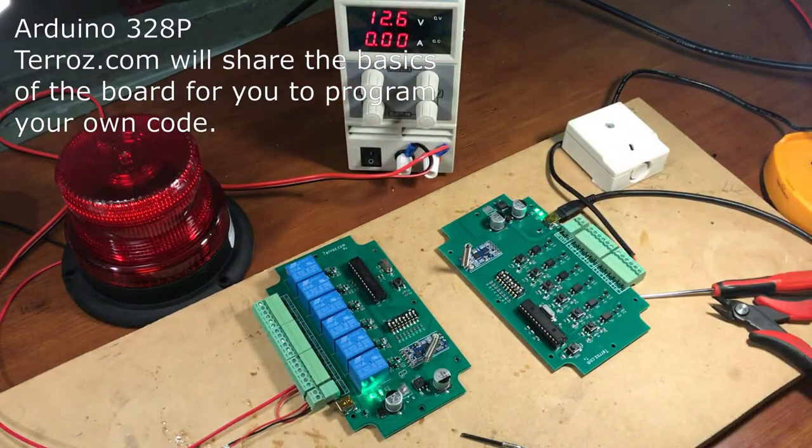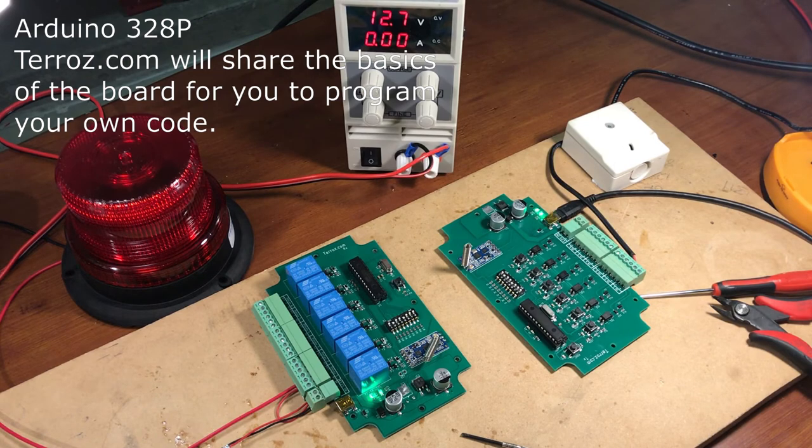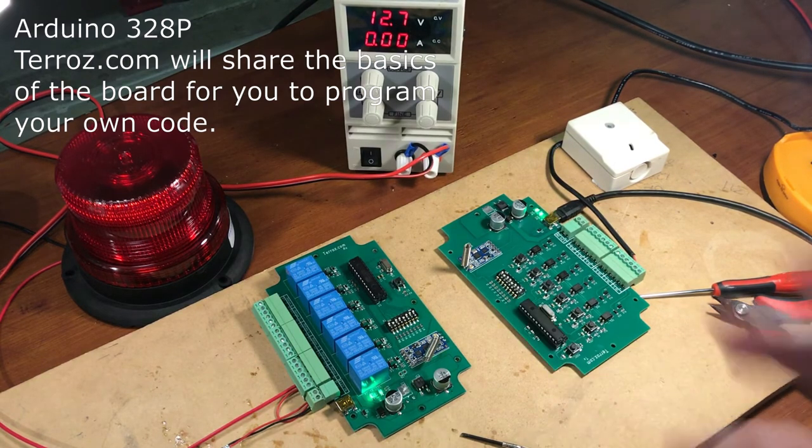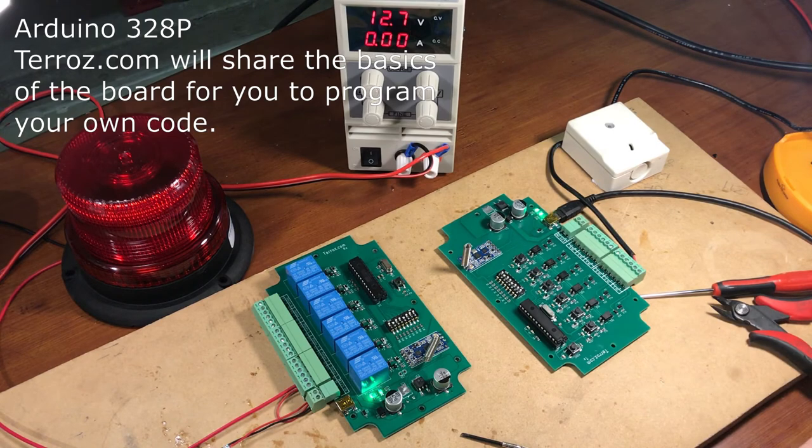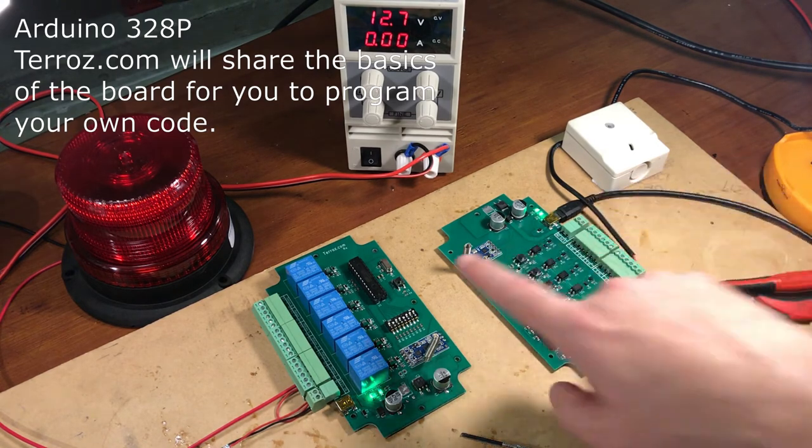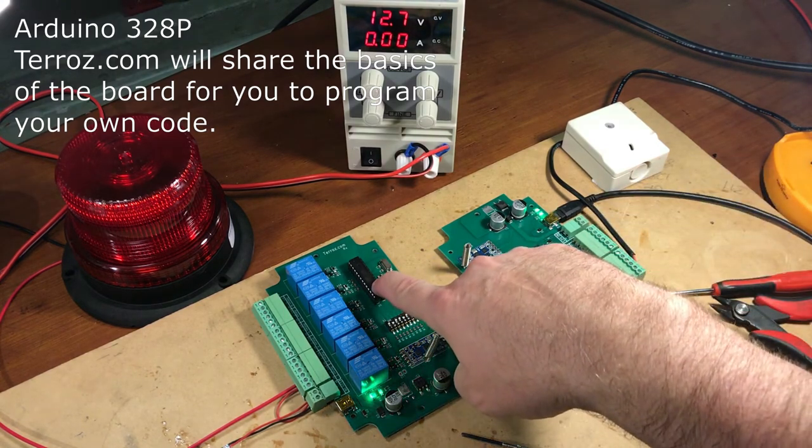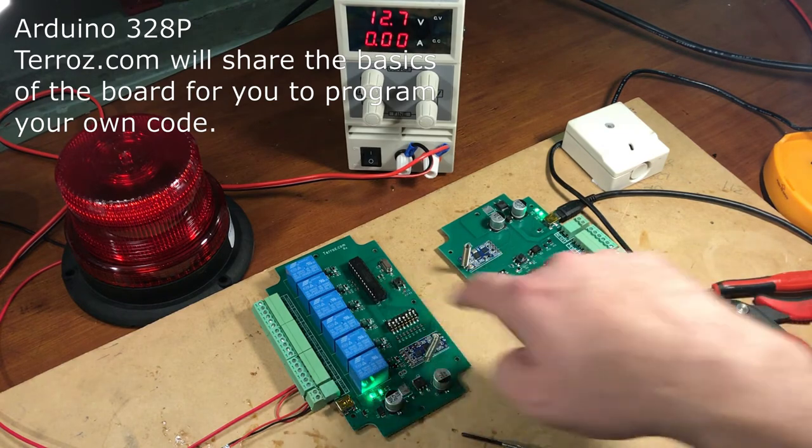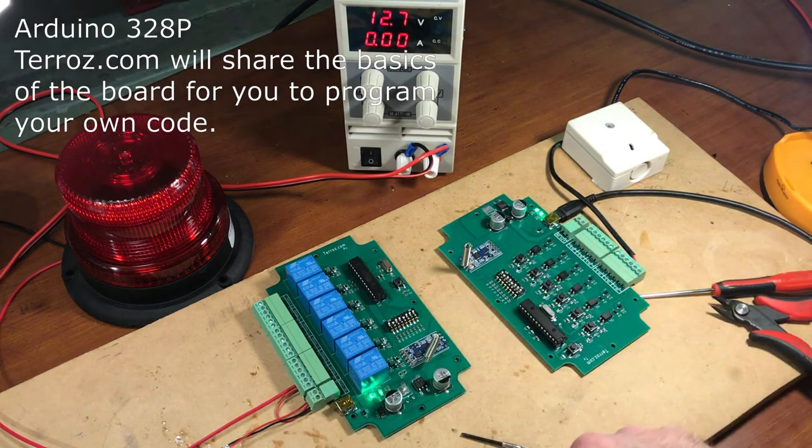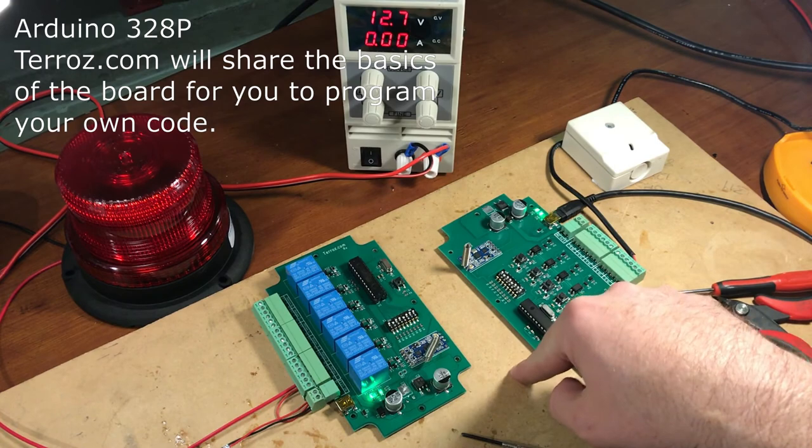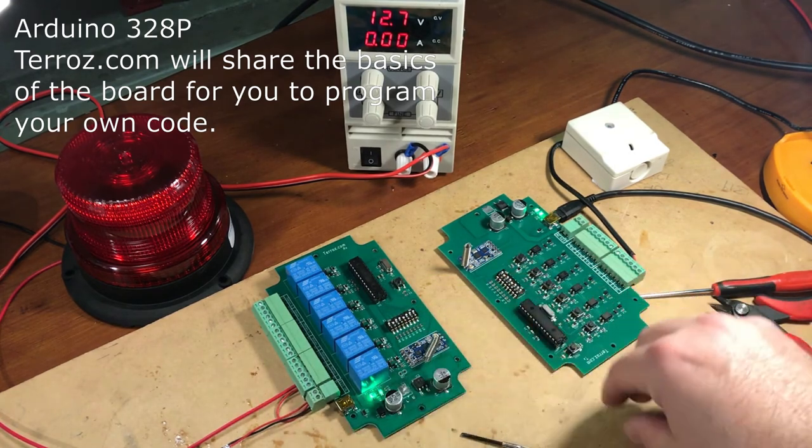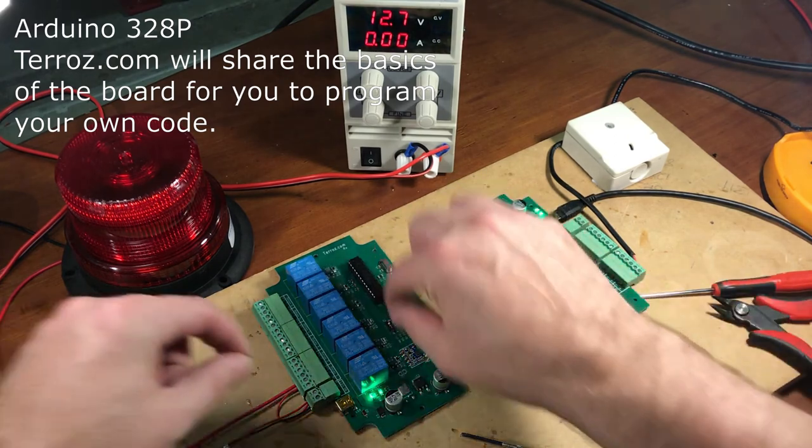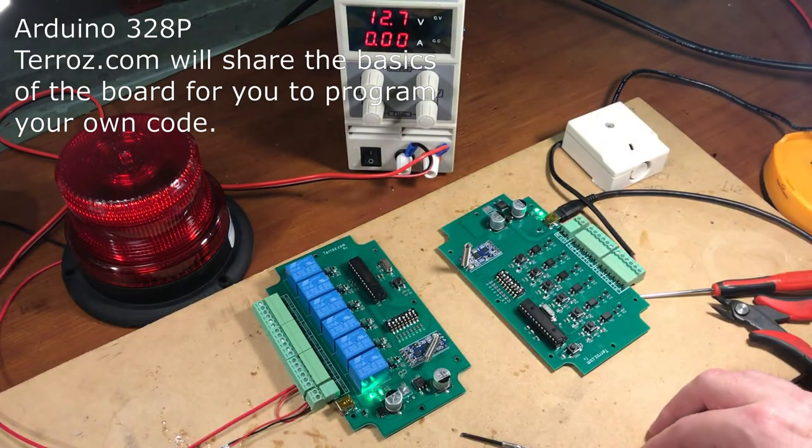One thing I wanted to mention here, I actually cut the tape, is that if you are Arduino savvy, so you know how to program Arduino, these are just Atmega328Ps, so you can actually pull them off and if you ask Terroz.com for an input output chart they will provide that for you. I mean you could sit there and meter it and figure it all out on your own.